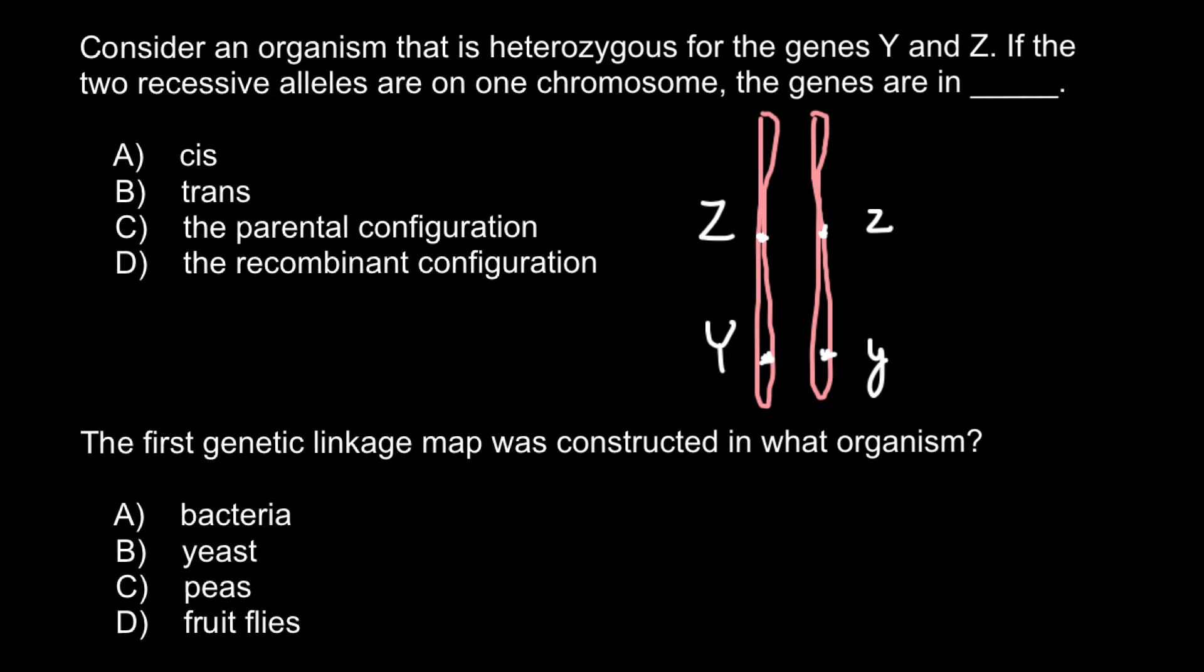From the chemistry course you probably remember that when we have one molecule, and if the position of some groups, for example R groups, would be on the same side, we call this cis configuration. When we have the same molecule and the position of R groups would be on different sides, we call this trans configuration. So R group here, R group here, and two R groups on the same side.